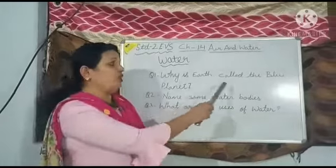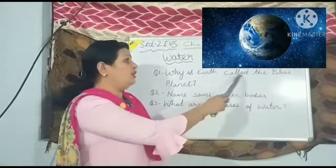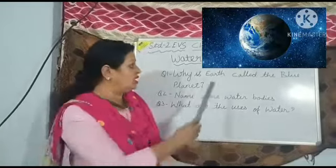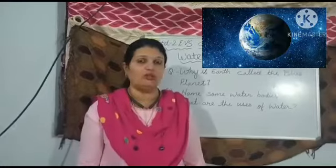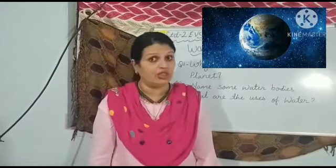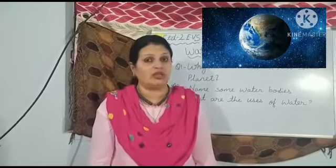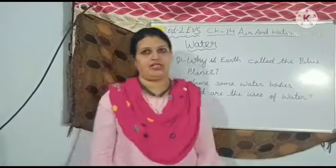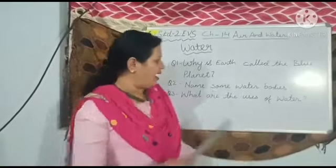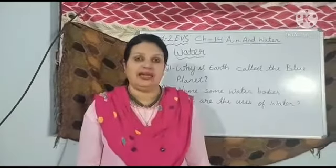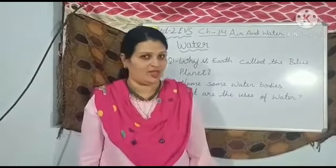Why is earth called the blue planet? Earth is called the blue planet because three-fourths of the earth is covered with water. Name some water bodies, children. Seas, oceans, rivers, ponds and lakes are some water bodies.